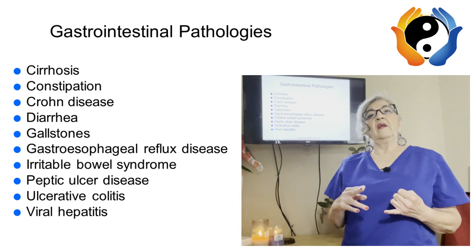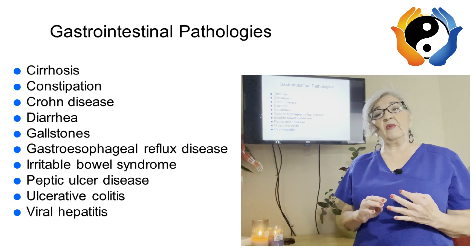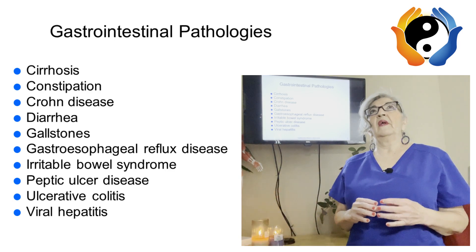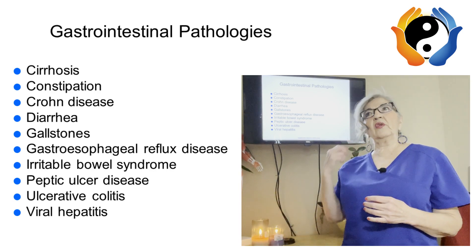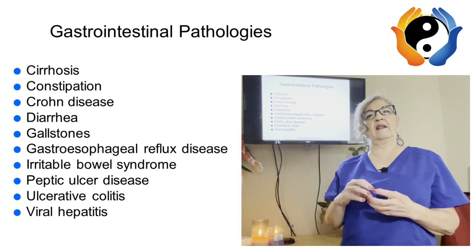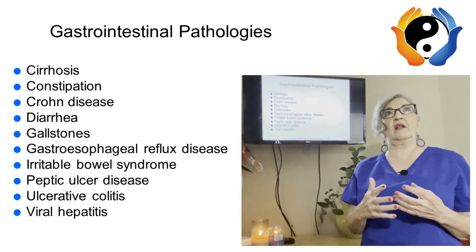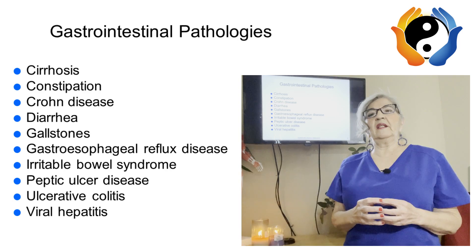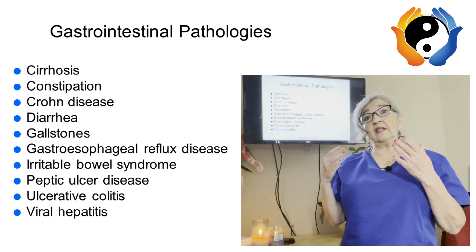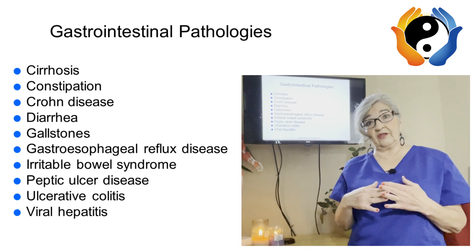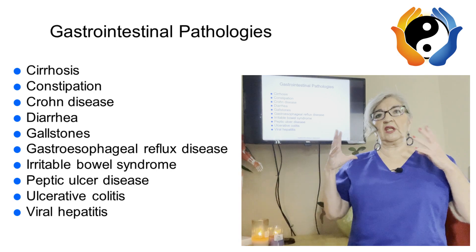One of the causes of cirrhosis is either alcoholism or hepatitis B or C. Once the liver starts getting damaged, it starts turning yellow and orange with little knobs on it — it's actually called 'hobnail liver.' This damage is irreversible, and people start getting jaundiced.